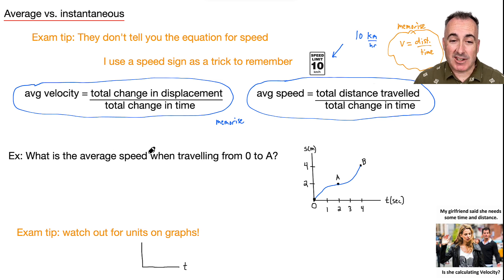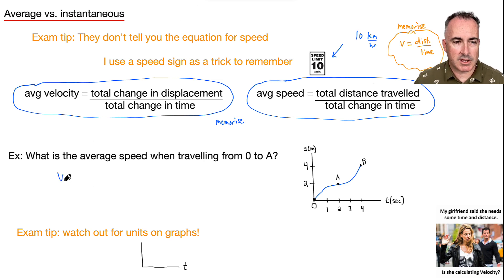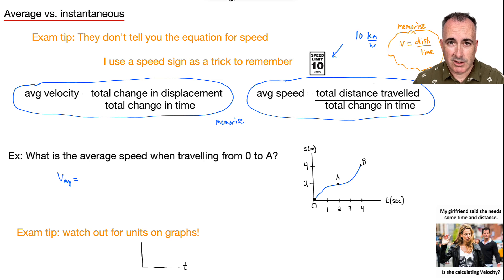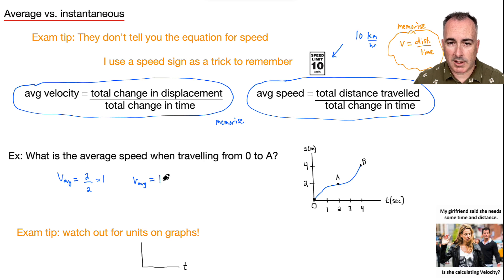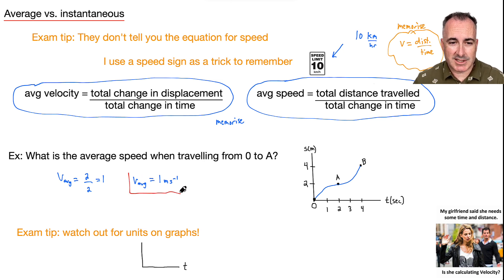What is the average speed when traveling from zero to A on this distance-versus-time graph? The average speed equals total distance traveled over total change in time. Distance traveled is two meters, and total time is also two seconds, so two over two equals one. My average speed is one meter seconds to the minus one.